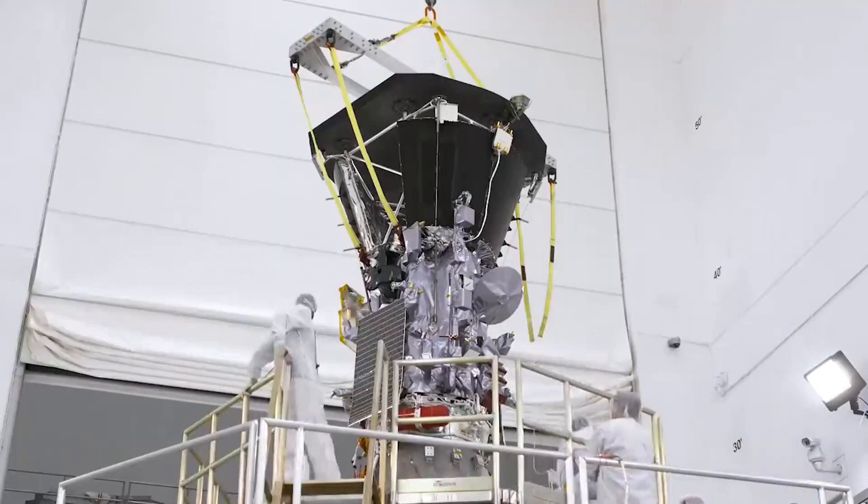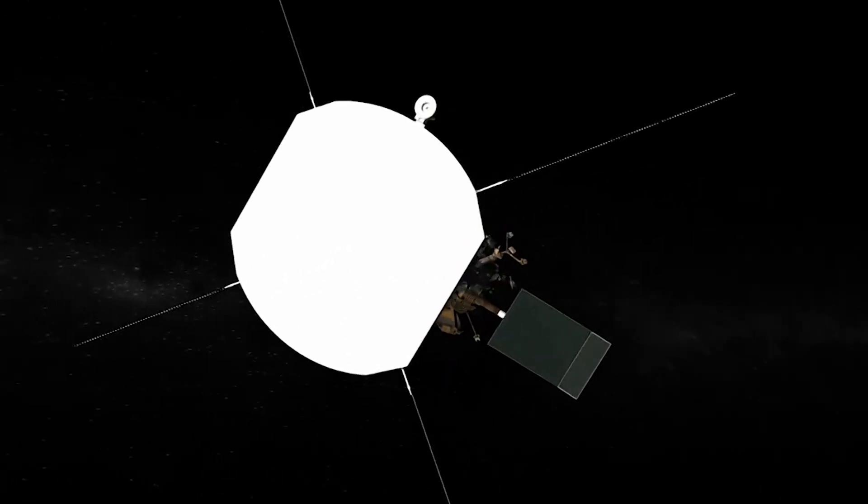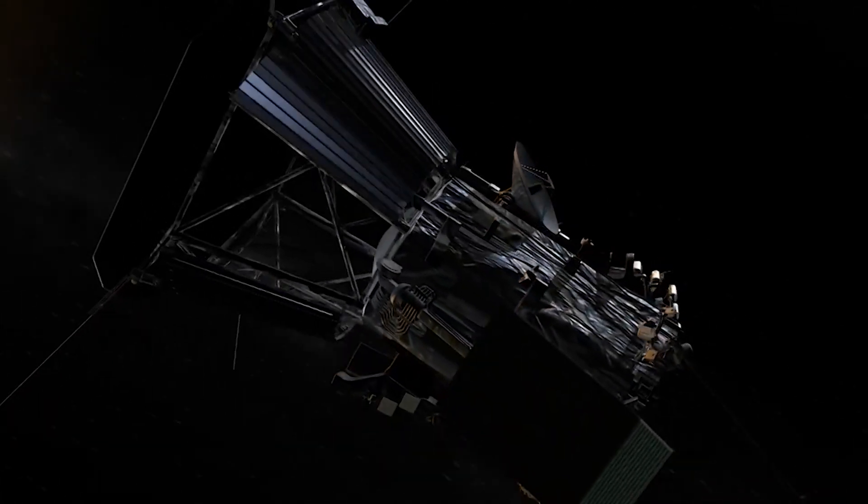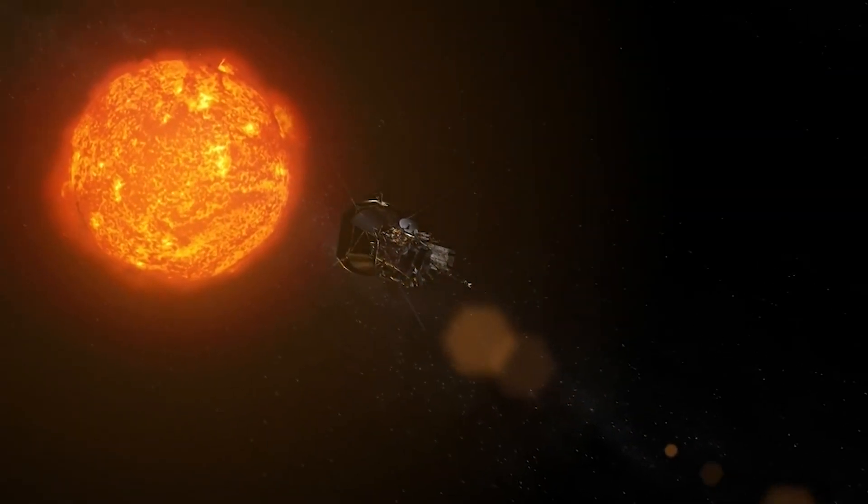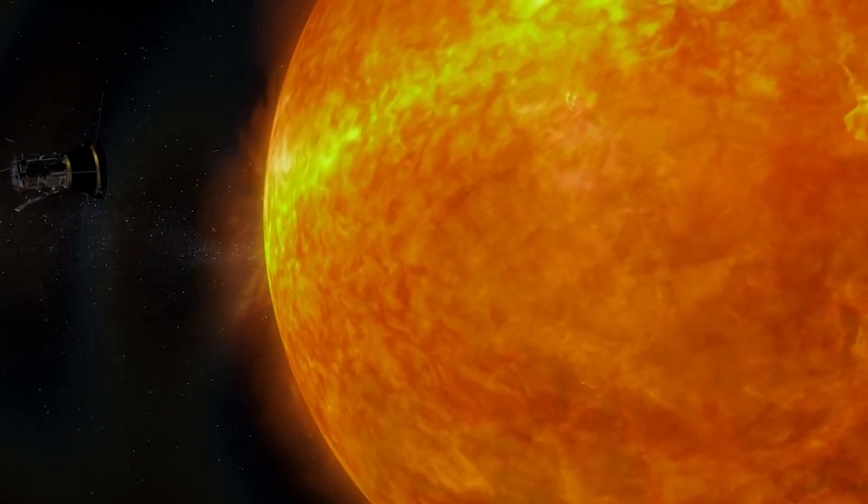The carbon composite shield on board the spacecraft is 11.43 centimeters thick and is designed to protect the spacecraft's scientific payload from the harsh space environment without sacrificing its ability to function normally.